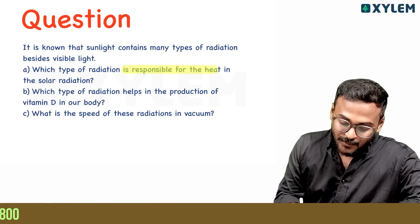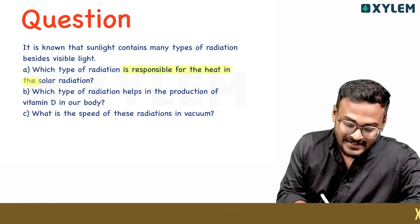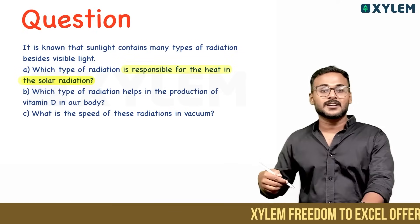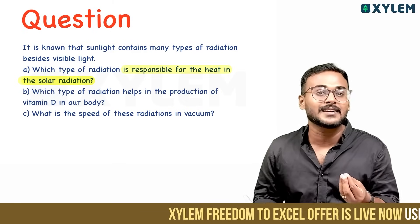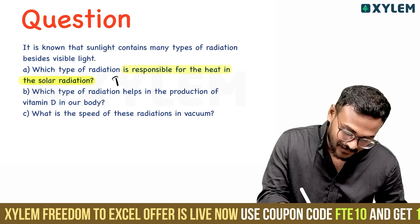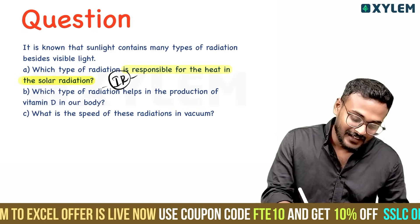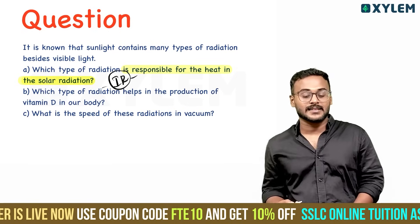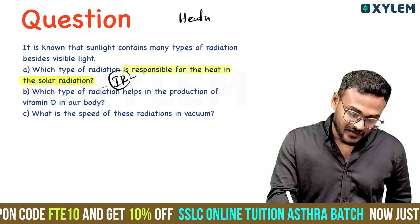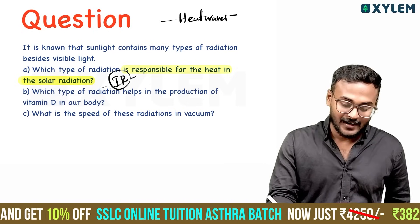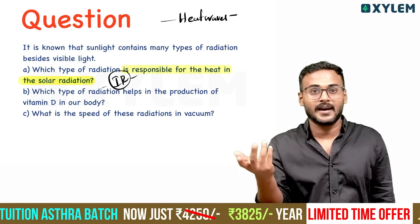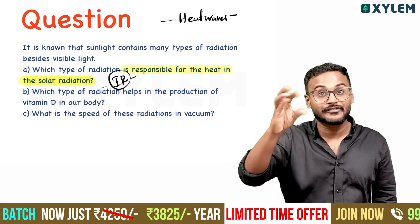Which type of radiation is responsible for the heat in solar radiation? The heat in solar radiation is because of infrared radiation. We call infrared radiation heat waves.